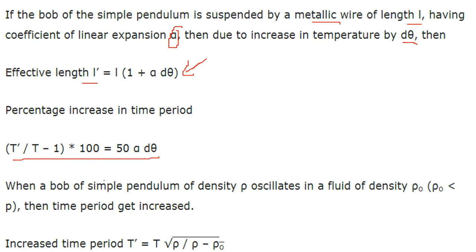When a bob of a simple pendulum of density ρ oscillates in a fluid of density ρ₀, where ρ₀ is less than ρ, the time period will increase. The increased time period T' is given by T' = T√(ρ / (ρ − ρ₀)).